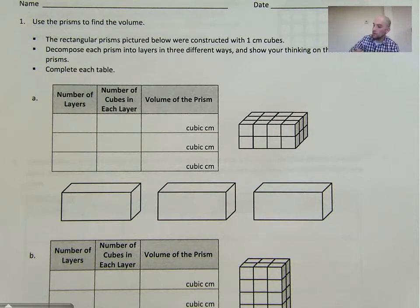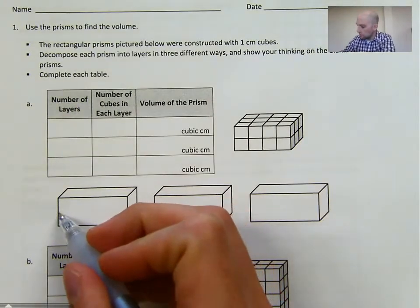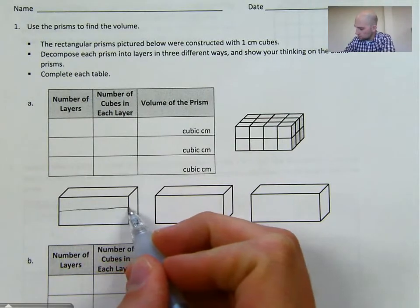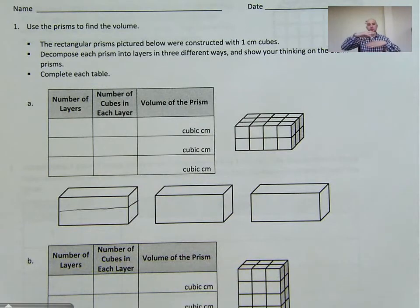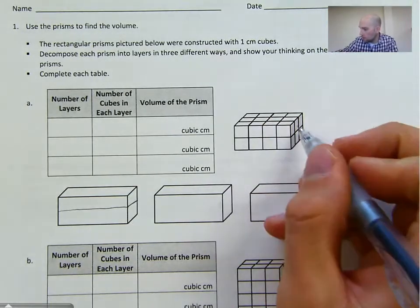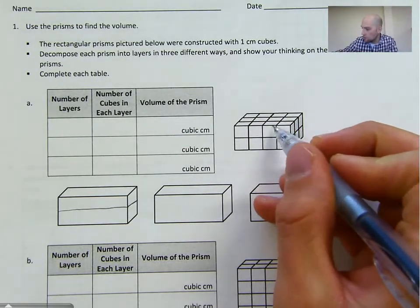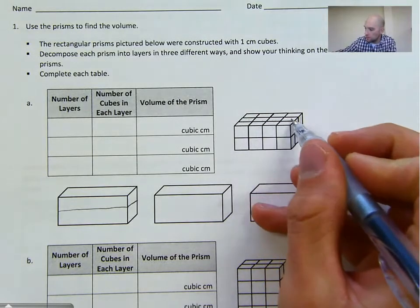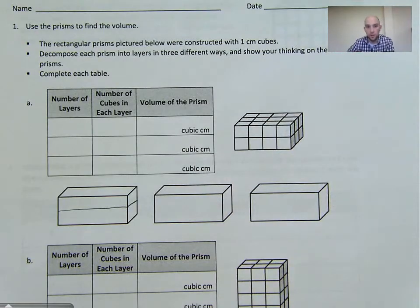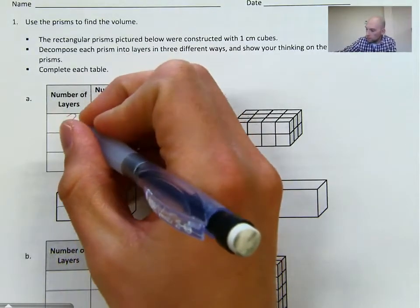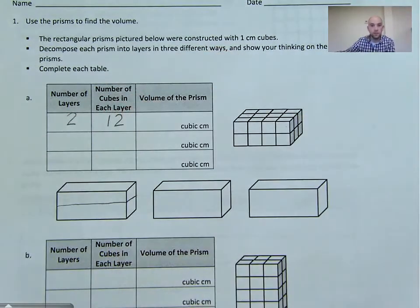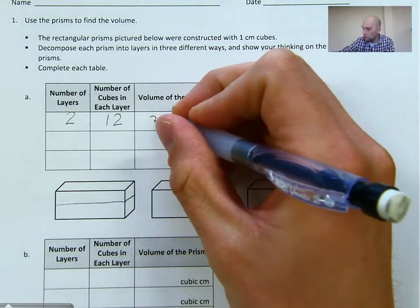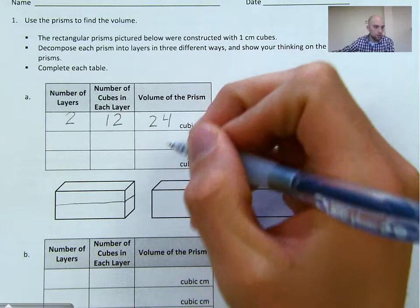The first way that we can cut this into layers is into two layers, like this. So imagine kind of like a wedding cake — we have layers on top of each other. There are going to be two layers there. Looking at the top one, it has 12 cubes in one layer. So there are two layers, and there are 12 cubes in each layer. And 2 times 12 is 24 — that will give us 24 cubic centimeters.